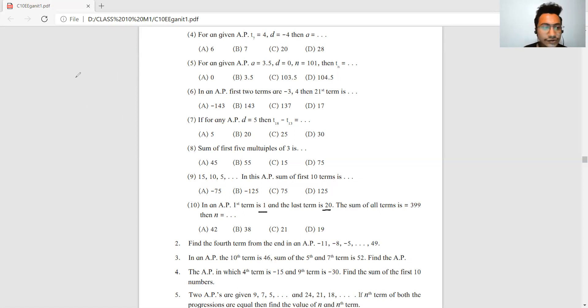Tenth question: First term is 1, last term is 20, sum of all terms is 399. Find n. So 399 equals n upon 2, bracket 1 plus 20. Now, 399 multiplied by 2 upon 21 equals n. Which formula did we apply? The Sn formula. Divide this by 21. 21 ones are 21, remaining is 189. 9 twenty-ones are 189. So 19 twos are 38. The answer is 38. I hope question number 1 to 10 are clear. If you liked the video, please like it and share it with your friends. Thank you.